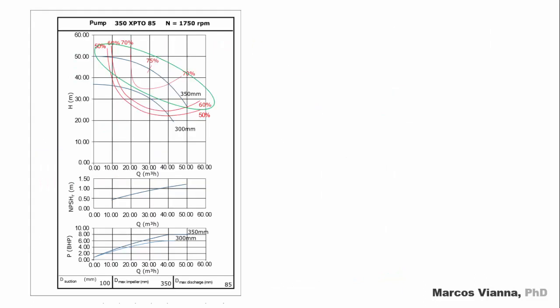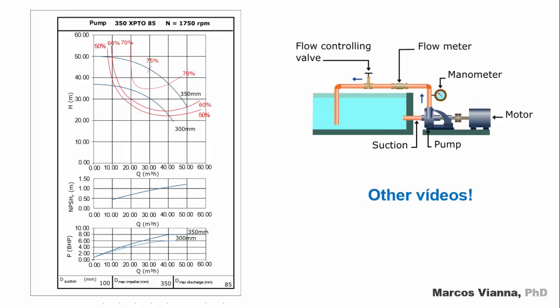Until we complete the curve. This is how the pump manufacturers obtain the curves that will be given to you. Of course, they will run tests like this for all the required impeller diameters of a given pump. Other tests are also important to fulfill the chart of the pump, such as the determination of its efficiency, its required net positive suction head, in short NPSH-R, and the power that it will require. But these are topics for other videos.